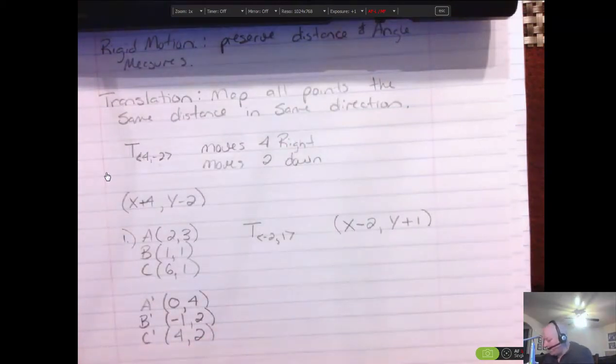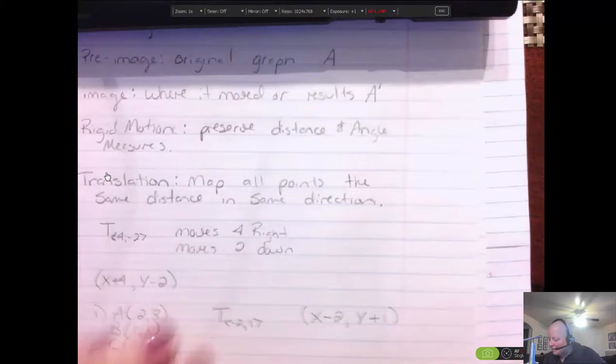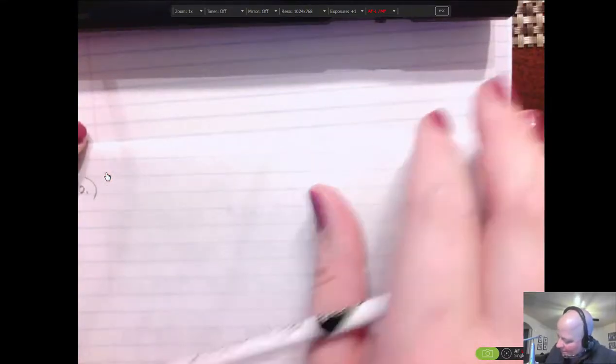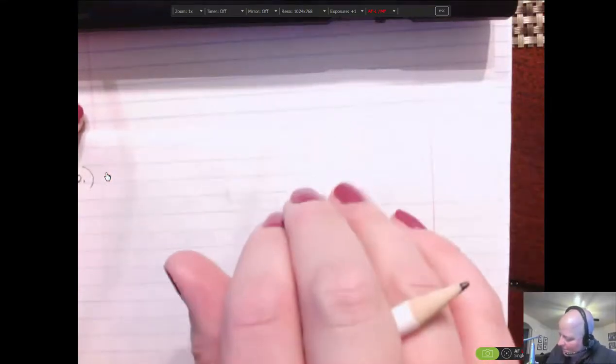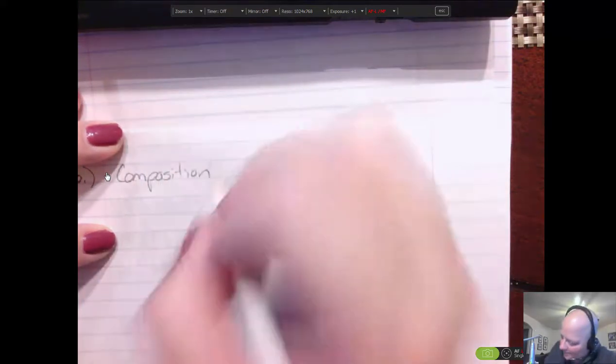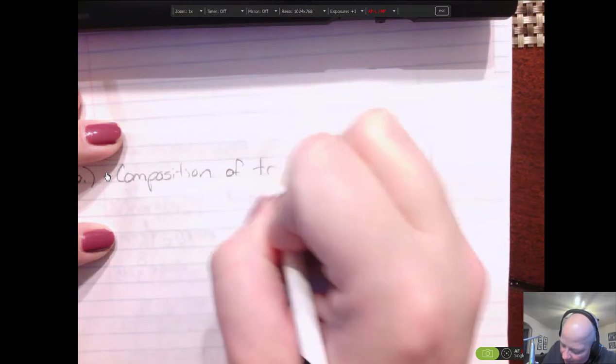Okay, so don't make these harder than they are. You're adding, you're subtracting. Now let's look at one other example. Another example, it might be written as a composite of functions. So let's look at those. So composite, or composition, composition of translations.